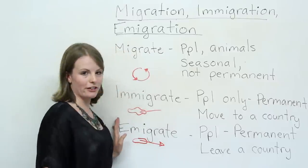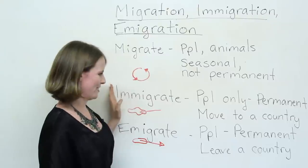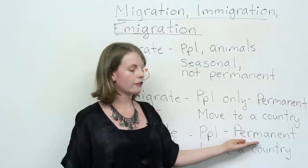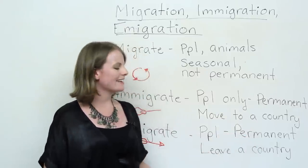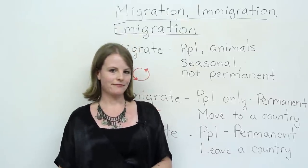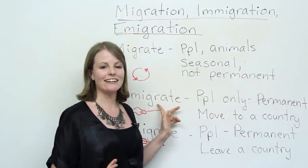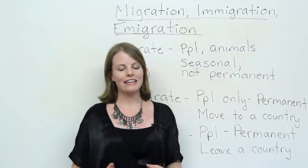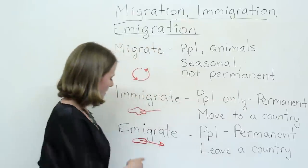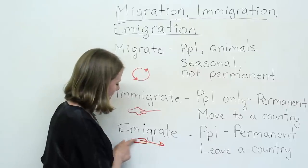Now let's look at the last word: emigrate. Emigrate is very similar to immigrate — it's about people, not animals, and it's also permanent, just like immigration. But the difference is in the meaning: it still has to do with movement, but it's about leaving a country. For example, my grandfather immigrated to Canada, but he emigrated from England. So it's the country you leave from — you are emigrating when you leave a country. Here's a picture of a country with an arrow showing you leaving.